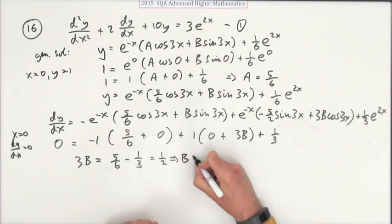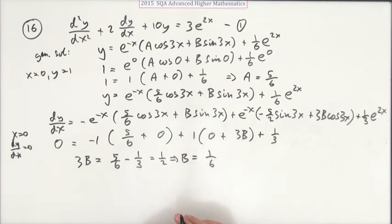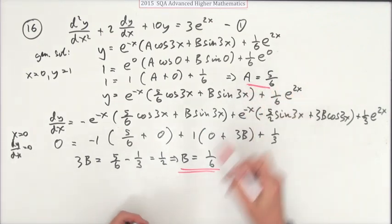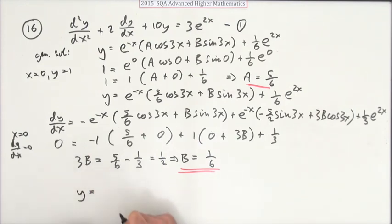Which means that when you divide by 3, B is also a sixth. There's another sixth. e is a sixth, a is a sixth. Now put it all together. So here we are.